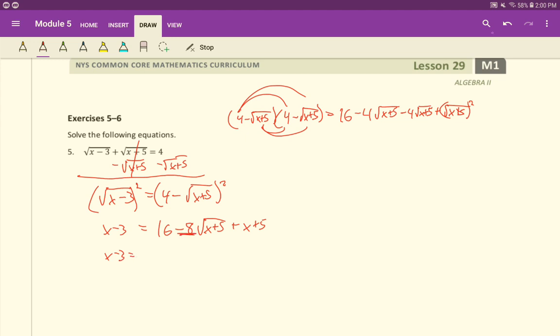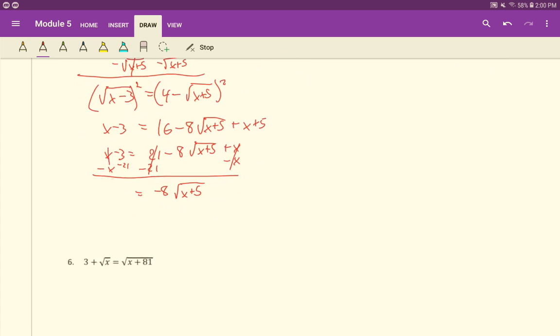So 16 and the 8, remember that 8 is attached to this root x plus 5, so they don't go together. But we can do the 16 and the 5, they'll go together, and that makes 21 minus 8 root x plus 5 plus x. So now we can start solving. Let's subtract x on both sides, because again, since we have this square root, we'll need to isolate that square root one more time. Let's also subtract 21 from both sides. So now we have negative 8 times root x plus 5 equals, well, the x's cancel, and we'll have just a negative 24 there.